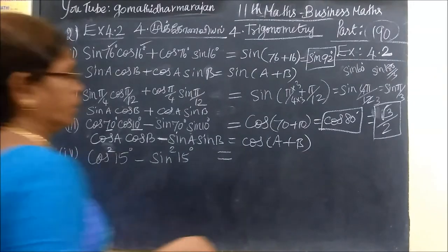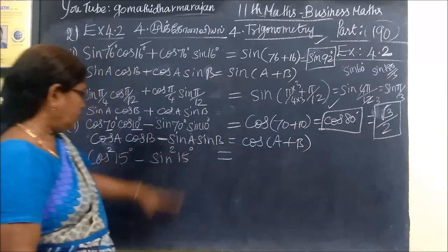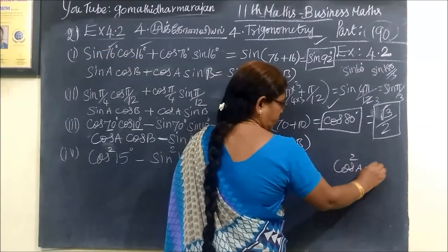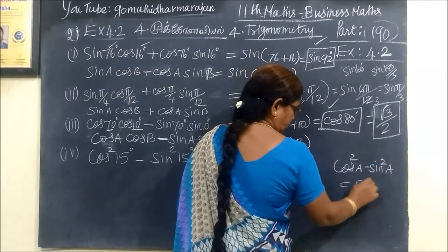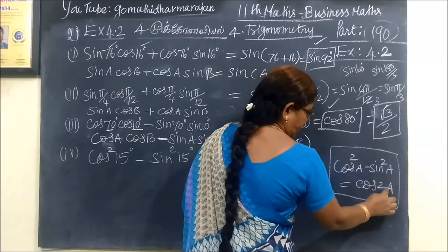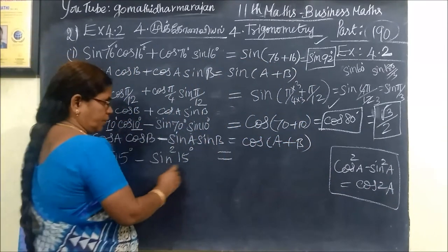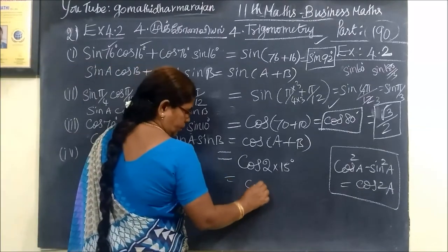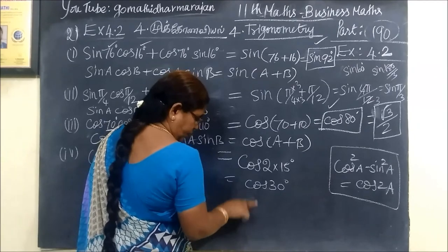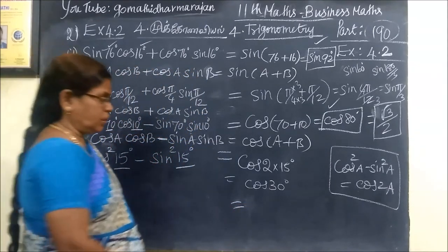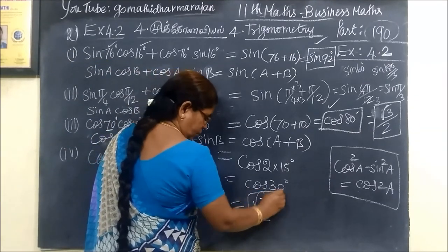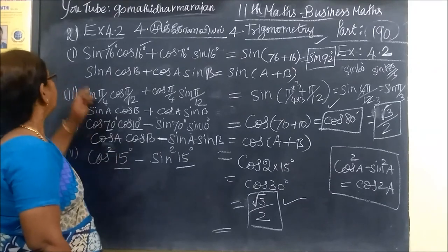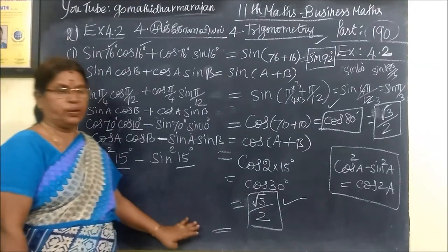Here you have cos 80 degrees. This answer is equal to cos 2A. This answer is equal to cos 30 degrees. Cos 30 is equal to root 3 by 2. So this answer will be equal to cos 31 degrees. Let's get started. Question number 3.